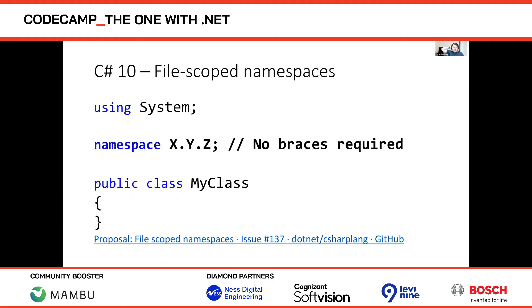The first C# 10 feature is file-scoped namespaces. It turns out that 99.9% of all C# files have a set of usings, then a namespace, and then a bunch of code all under that one namespace. That means every C# file sits with an extra level of indentation on the left. We're looking at allowing a file-scoped namespace syntax where you declare the namespace once and everything in the file is in it, without braces.